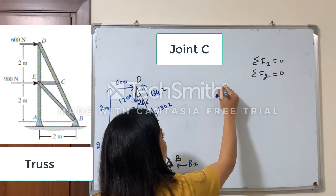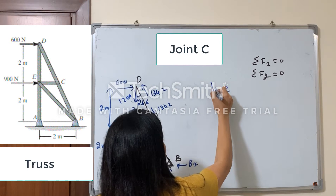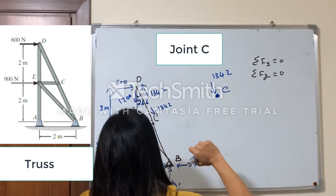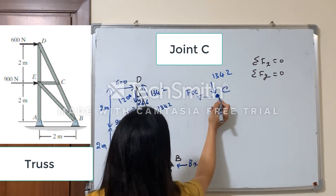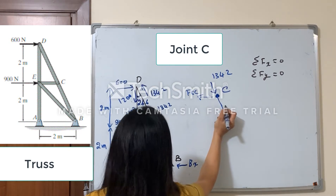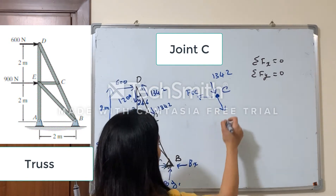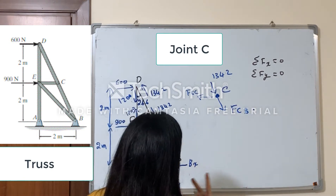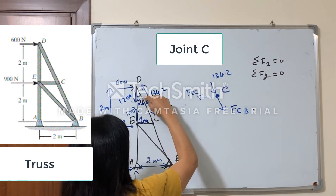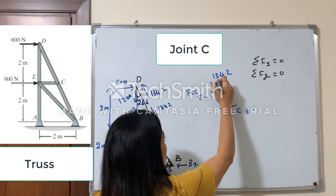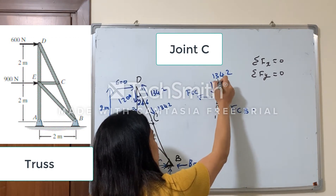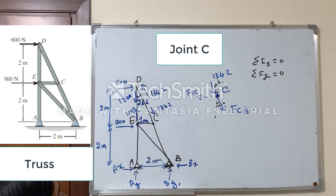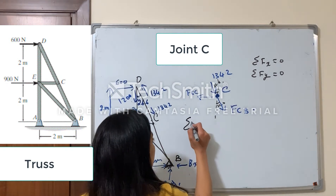Okay, so this is joint C. I'm sure that this is 1342 and this is an unknown force FEC, also collinear to this force. This is also unknown and this is FCB. I know an angle; in fact I know that this is 26.6°, and this means that this is 26.6° and this is also 26.6°. Okay, so let's apply the two equations of equilibrium.